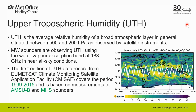UTH is the average relative humidity of a broad atmospheric layer, in general situated between 500 and 200 hPa, as observed by satellite instruments. Here we are using microwave sounders, and more specifically their measurements at 183 GHz, to provide UTH in near all-sky conditions.